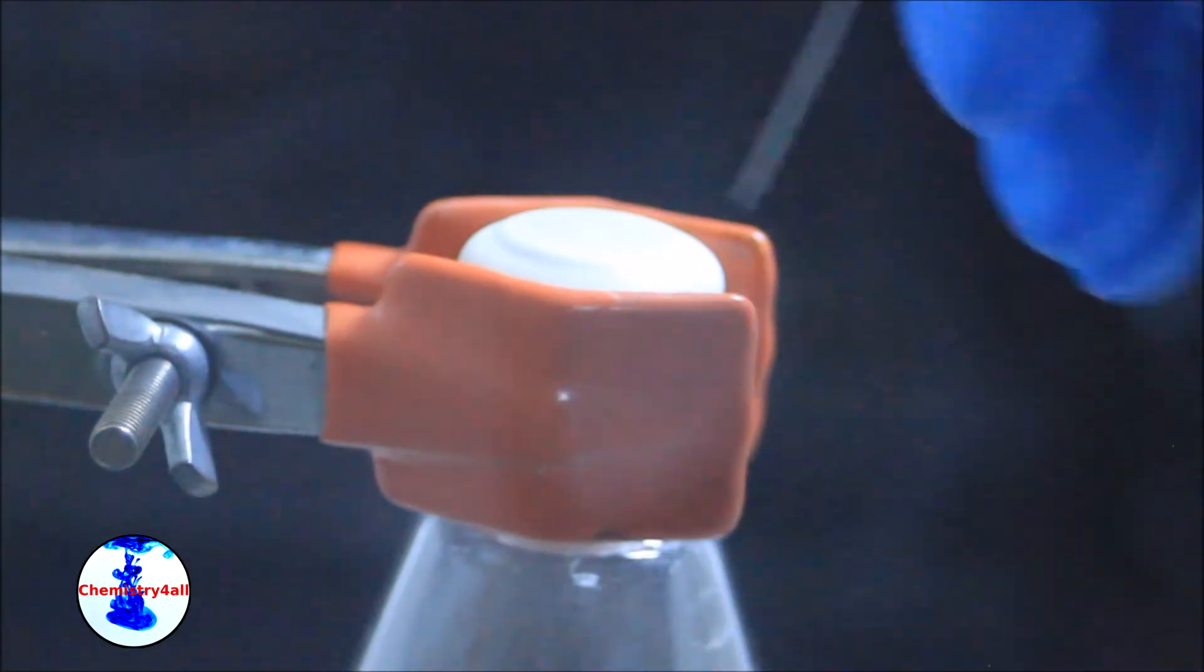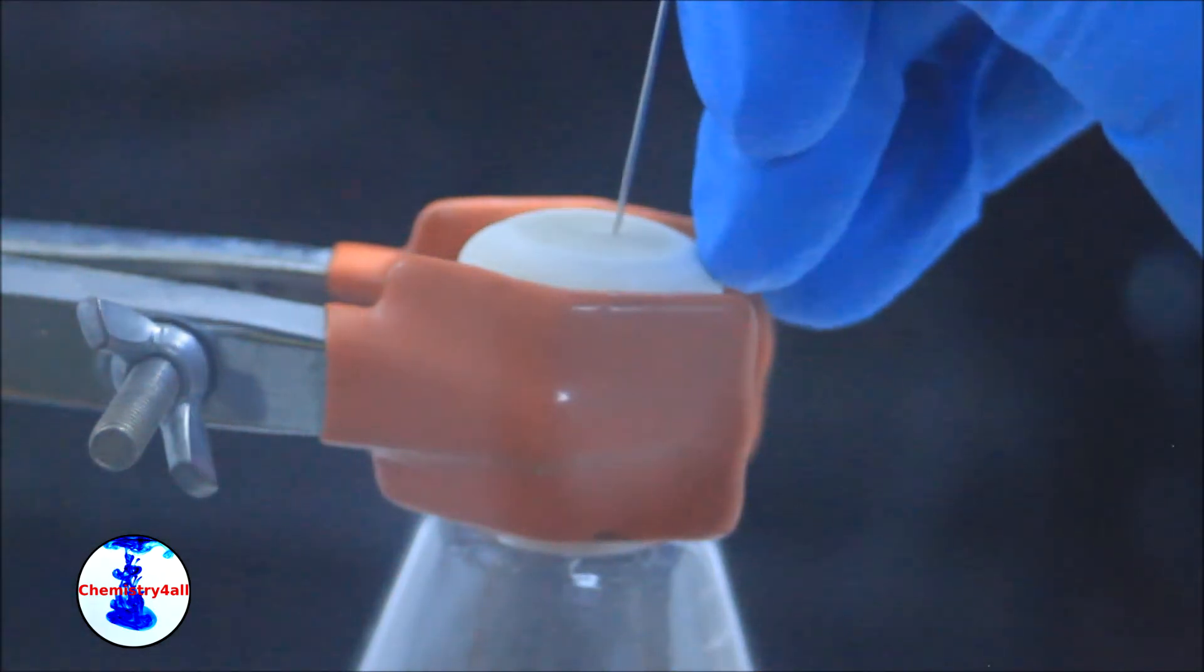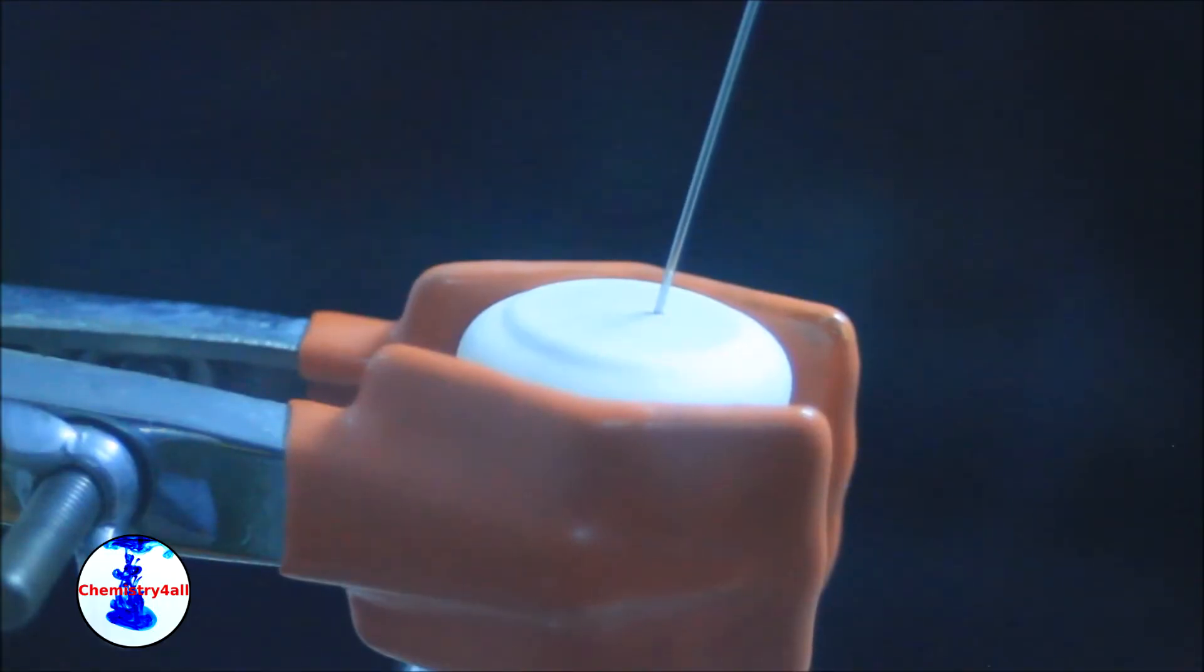Then the balloon is connected to the septum of the flask and another needle is added so that we can flush the flask with argon.